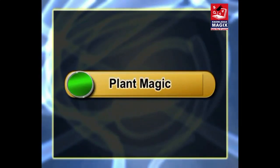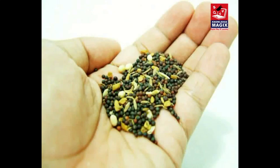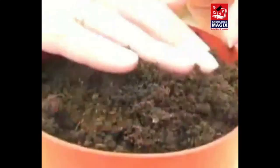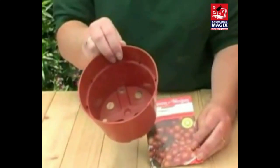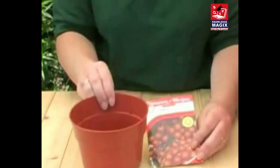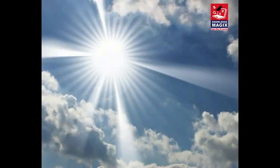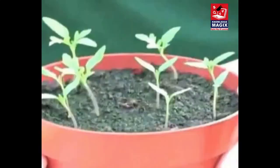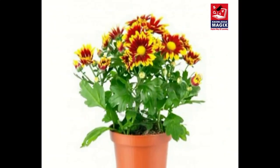Plant Magic. A little seed for me to sow, a little earth to make it grow, a little hole, a little pot, a little wish and that is that, a little sun, a little shower, a little while and then a flower.